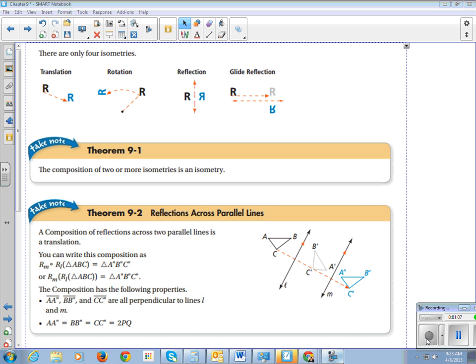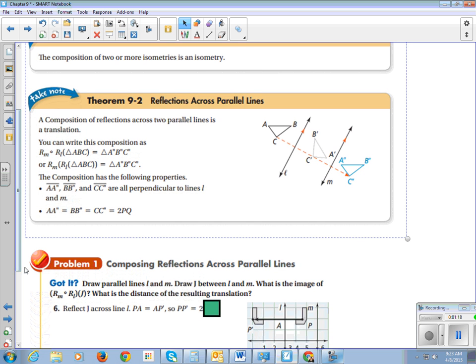A composition of reflections across two parallel lines is a translation. You can write this composition as... So if you look, you've got two reflections. So it gets a prime prime. So we've got triangle A double prime, B double prime, C double prime. And the composition has the distance between the image and the pre-image coordinates all perpendicular to the lines. The line segments from the pre-image to the image are all perpendicular to the lines L and M.